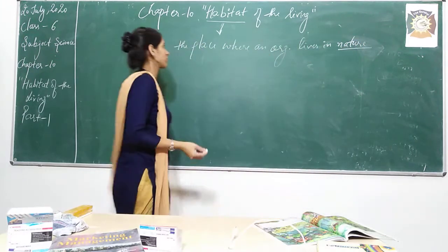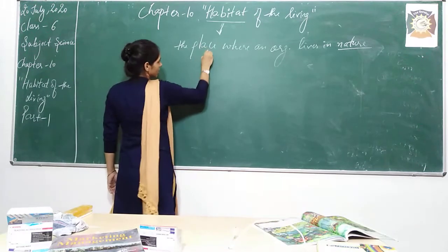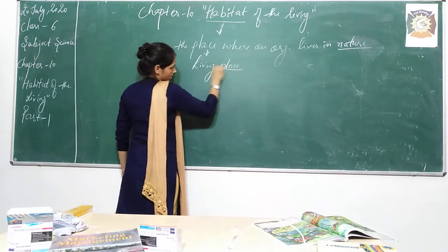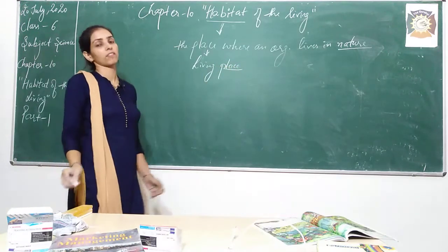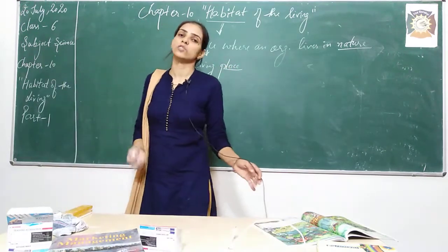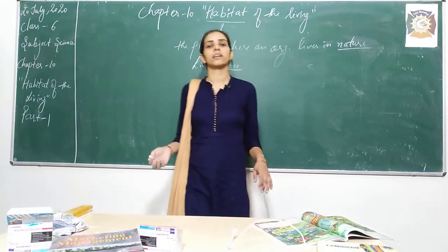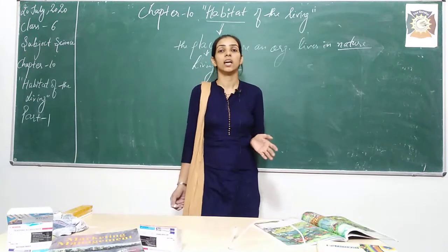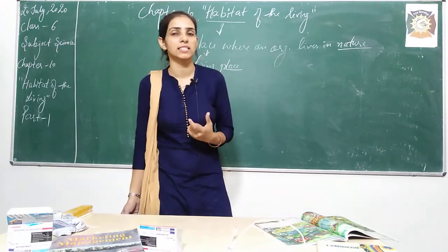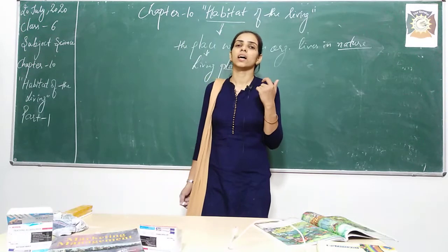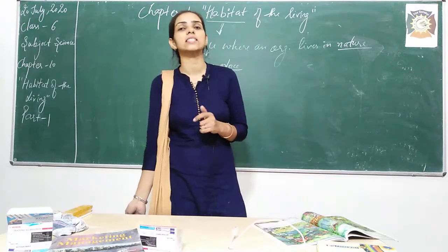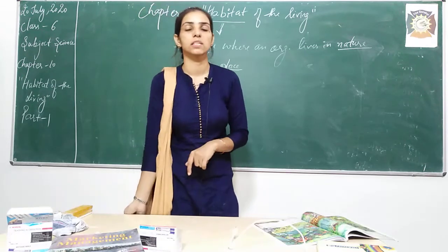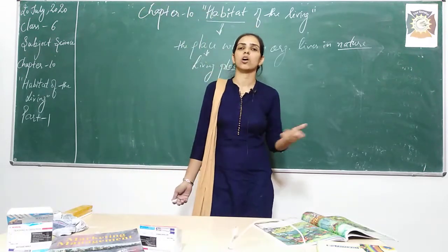Or in short, we can also call it the living place. For example, if we are living in grasslands, then grassland is the habitat. If some organism is living in a forest, then forest is its habitat. Even if some micro-organism is living in a leaf or some log of wood, then the habitat for those small organisms is the leaf litter and the log of wood itself.